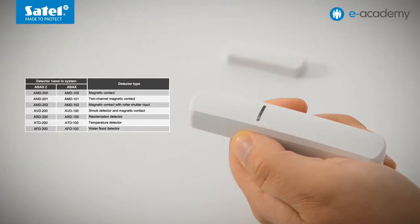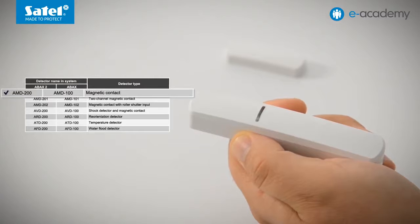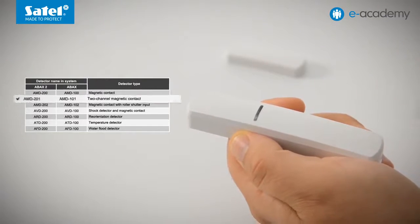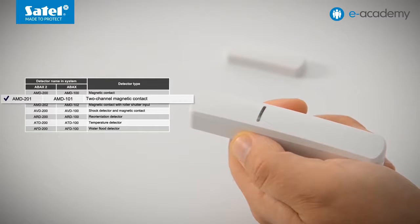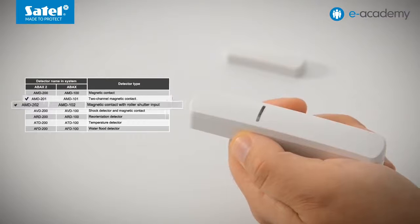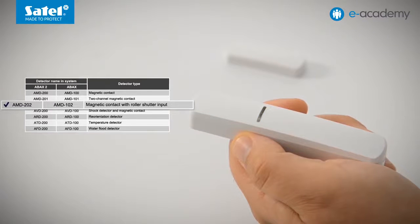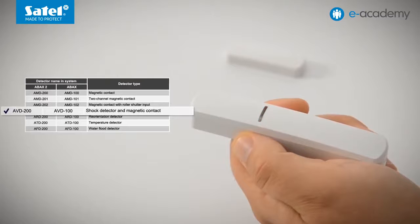Now count how many times the LED will flash. Once, this means a magnetic contact. If you do not tap the enclosure again, this type will be remembered after 10 seconds. To make a change, tap on the enclosure once. Two flashes: two-channel magnetic contact. Tap again. Three flashes: magnetic contact with roller shutter input. Another tap. The LED has flashed four times, which means shock detector and magnetic contact. Tap. Five flashes: reorientation detector.